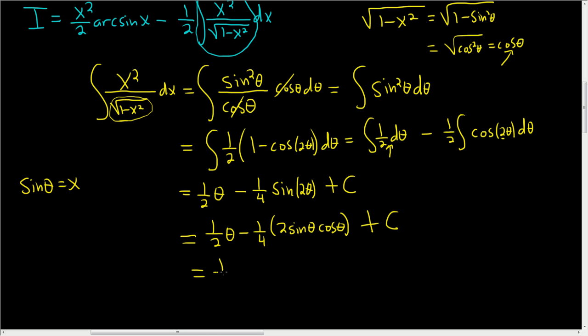and then we still have plus c. So this is equal to 1 half theta, minus, these cancel, so we get 1 half sine theta cosine theta plus c. And now we can finally draw our triangle.